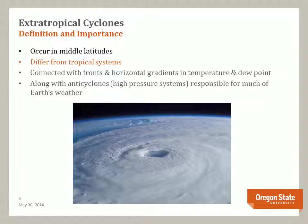Extra-tropical cyclones differ from tropical systems that form closer to the equator. Tropical cyclones are systems associated with areas of intense low pressure, high winds, and large amounts of precipitation. In North America, they are called hurricanes. In Southeast Asia, they are referred to as typhoons.